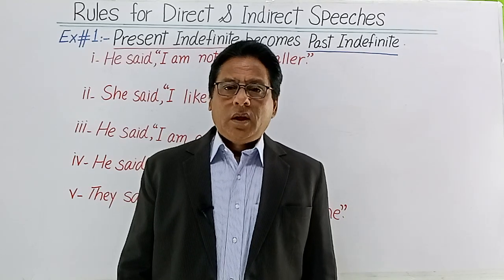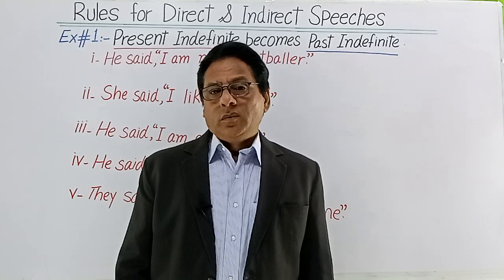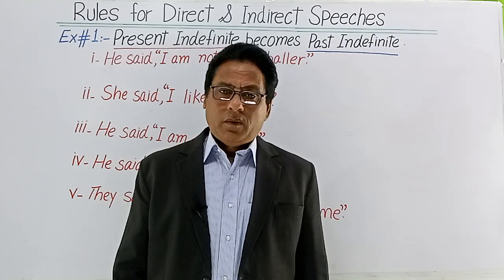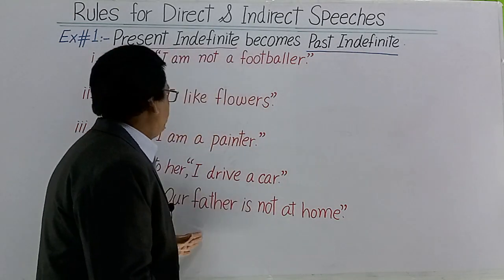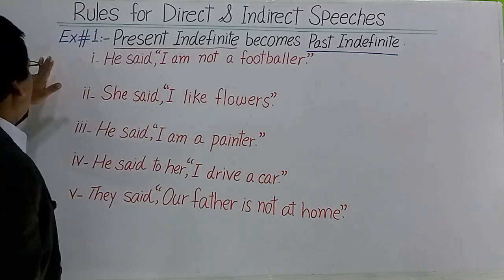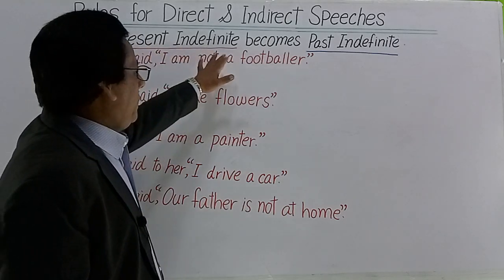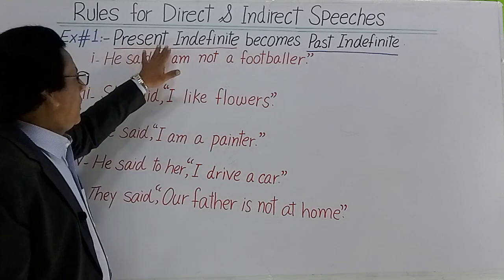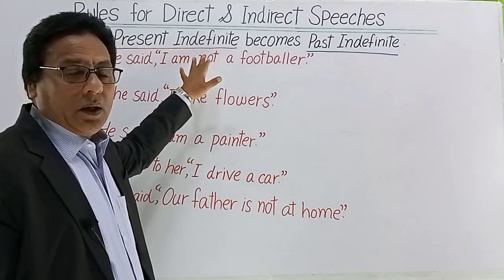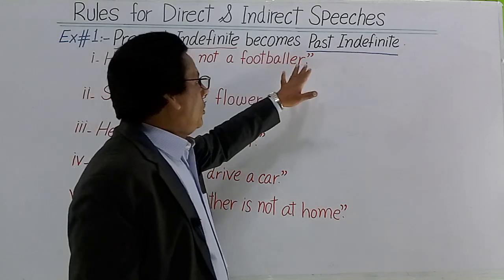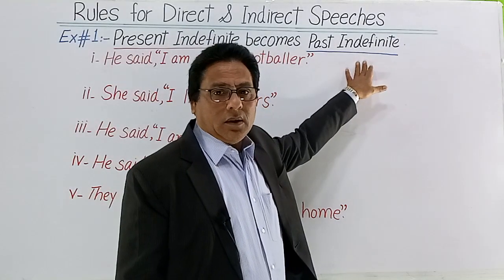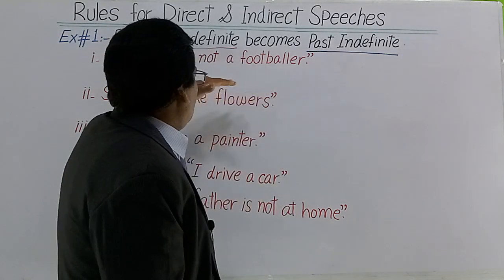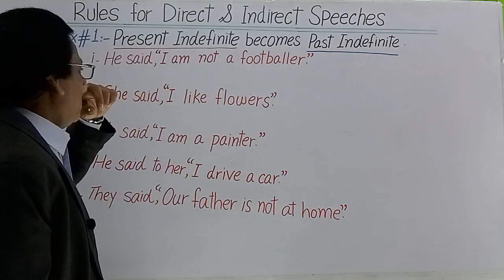Hi everyone, how are you today? We are going to do the first exercise from direct to indirect form. This is exercise number one: present indefinite becomes past indefinite. Present indefinite میں کیسے جملے ہوتے ہیں — وہ کھانا کھاتا ہے، پیتا ہے، آتا ہے، جاتا ہے۔ Past indefinite میں: اس نے کھانا کھایا تھا، پیا تھا، گیا تھا، آیا تھا۔